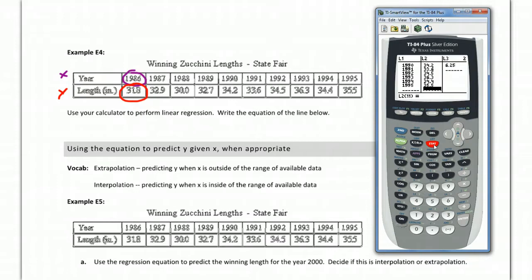Now we click stat, go over to calc, just like we are going to do mean or standard deviation. But instead of one-var stats we're going to go down to lin reg, lin reg right here. Now we're going to push enter and push enter a second time, and we get a screen that looks like this.